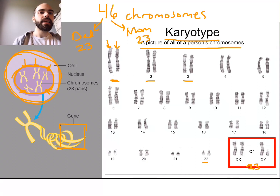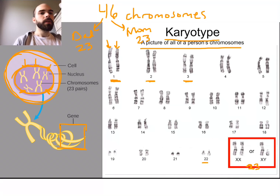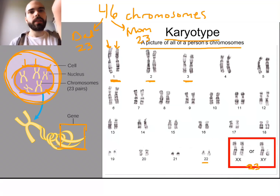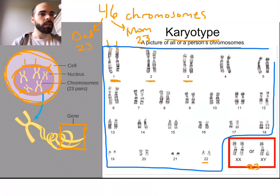You may notice that the chromosomes are ordered based on their size. So number 1 is the biggest of all, number 2 is just a little smaller, number 3 is a little smaller, and so on. What you need to know is that the first 22 pairs are what we call autosomes.